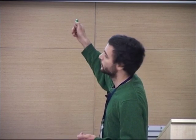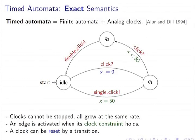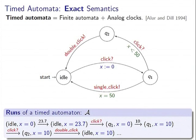Our work is also on timed automata. Just to recall: timed automata are finite automata with clocks. We have clock guards on the edges and clock resets. This defines a natural semantics by delayed transitions where all clocks grow by some amount, and by discrete transitions which are instantaneous, taken in zero time. Such a sequence is one possible behavior of the system.